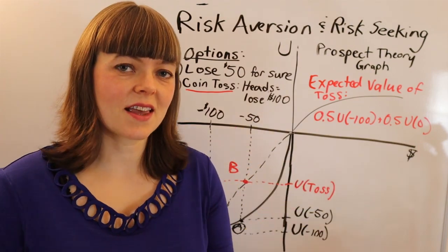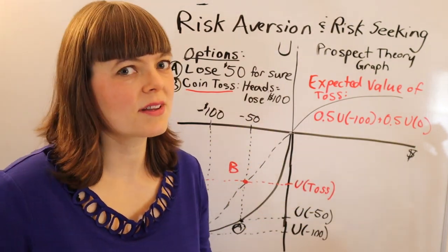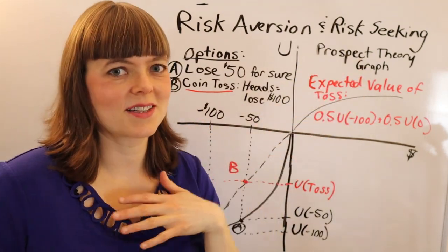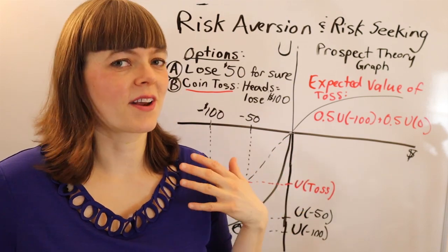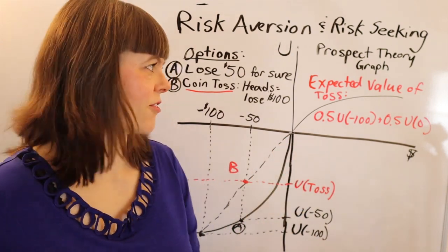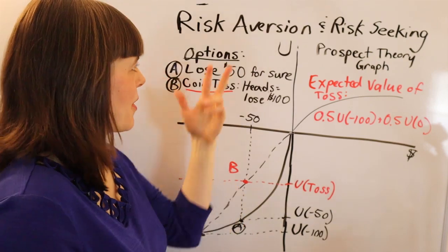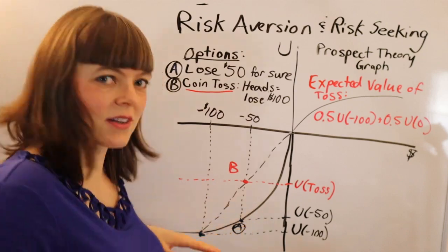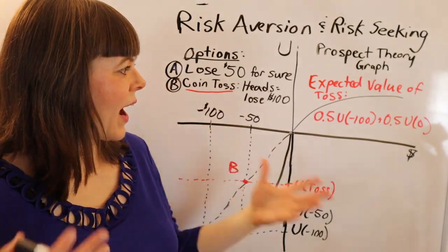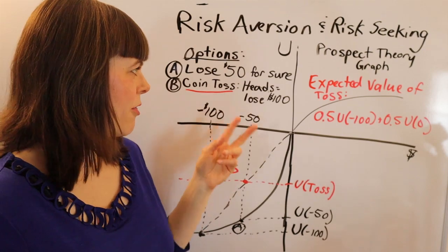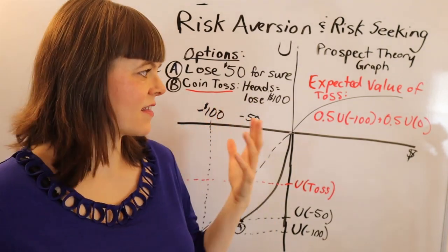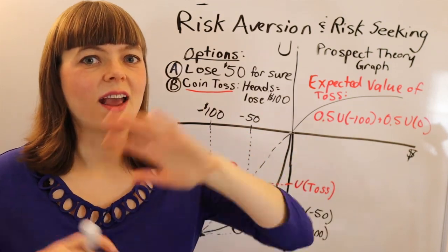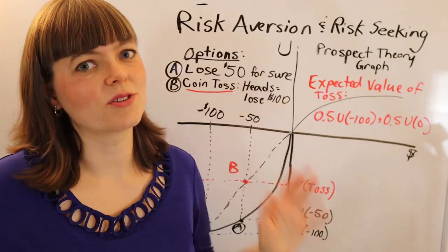People tend to be risk-seeking in the negative realm, and that has some really interesting consequences. If you're interested in those consequences, look up prospect theory — it's incredibly powerful for predicting human behavior in many different areas. I hope you found this helpful in thinking about risk aversion and risk-seeking behavior with concave and convex utility functions, and how we think about this when considering things like insurance, expected value of money, expected utility, and the use of utility functions.